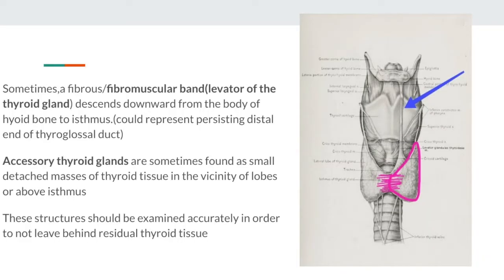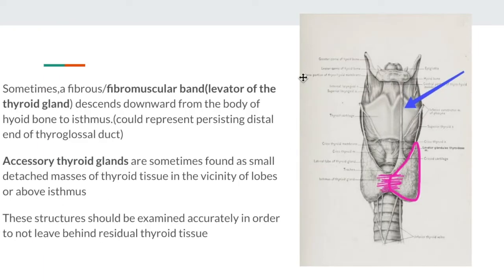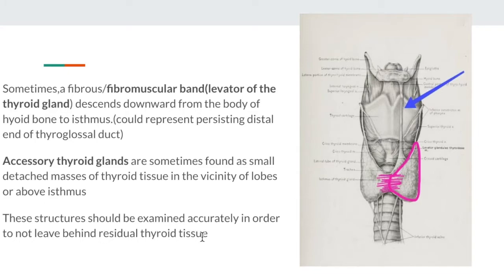As mentioned, the thyroid consists of two lobes and sometimes a pyramidal lobe. Sometimes there is a fibromuscular band — the levator of the thyroid gland — which descends downward from the hyoid to the isthmus, possibly representing persistent distilling of the thyroglossal duct. There may also be accessory thyroid glands found near the lobes, above the isthmus, or in relation to the thyrohyoid. These structures should be examined accurately to avoid leaving behind residual thyroid tissue during thyroidectomy.